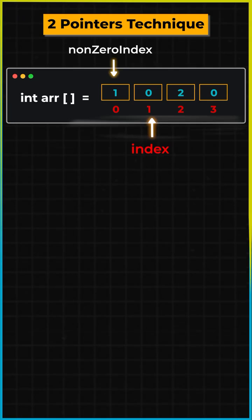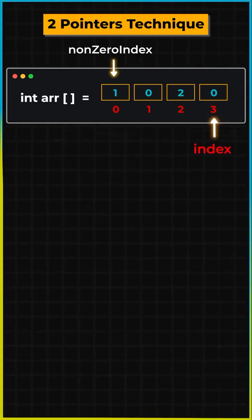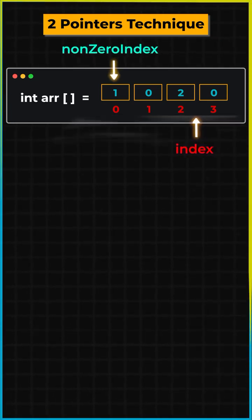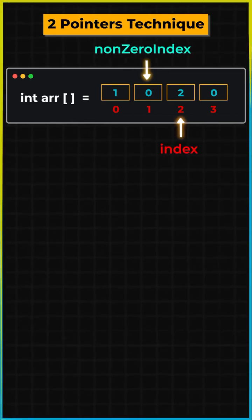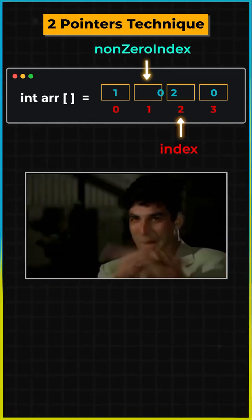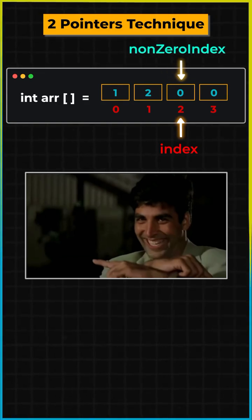Index is going to be responsible for traversing the array, and the non-zero index will point to the non-zero values. Whenever we encounter a non-zero value, we will do the swap and increment the non-zero index by 1.